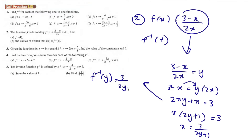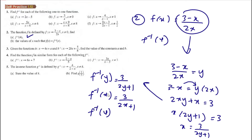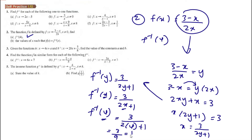So f inverse of y equals 3 over (2y plus 1), which means f inverse of x equals 3 over (2x plus 1). To find f inverse of 4, we substitute x equals 4: 3 over (2 times 4 plus 1) equals 3 over 9, which equals 1 over 3.